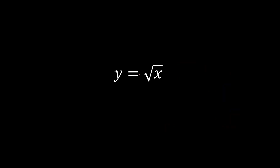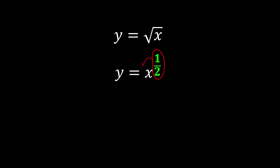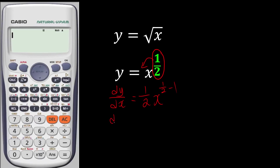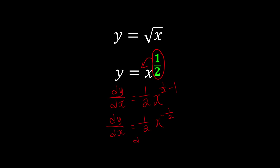Going back to our example: we convert y equal to square root of x to y equal to x to the power of 1 over 2. We bring the power down: dy over dx equals 1 over 2 times x to the power of 1 over 2 minus 1. Now 1 over 2 minus 1 is negative 1 over 2. So we bring the negative 1 over 2 power down to get dy over dx equal to 1 over 2 times x to the power of 1 over 2. But x to the power of 1 over 2 is just the square root of x, so it becomes 1 over 2 square root of x.